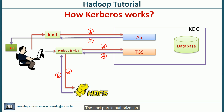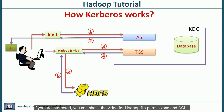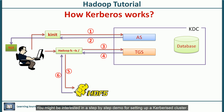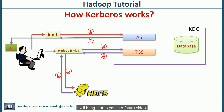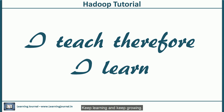The next part is authorization. If you have permissions to list the root directory, the name node will return the results back to you. I have already covered HDFS authorization in an earlier video — you can check the video for Hadoop file permissions and ACLs. That's all about Kerberos authentication in Hadoop. You might be interested in a step-by-step demo for setting up a Kerberized cluster — I will bring that in a future video. Thank you for watching Learning Journal. Subscribe for more videos and updates. Keep learning and keep growing.